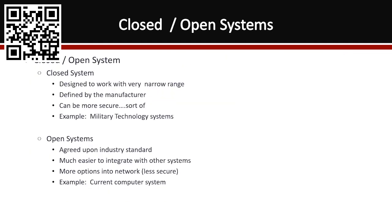You also have closed and open systems. A closed system is designed to work very specifically in a very narrow range. In the military, we used to have networking systems connected to airplanes — those are in a very closed, tight range. They are designed to work specifically with those machines, not to be plugged into your local network. They're defined by the manufacturer and designed specifically for a specific purpose.